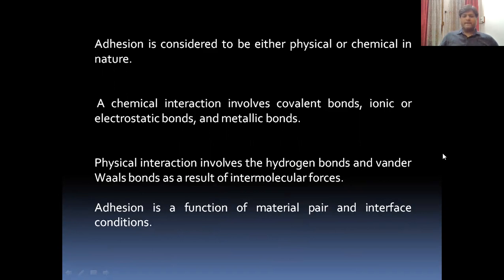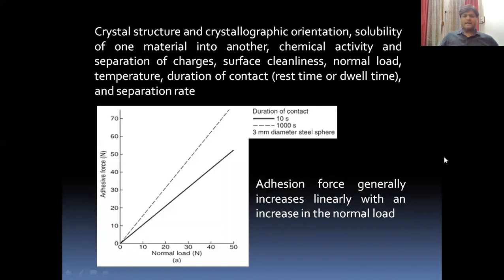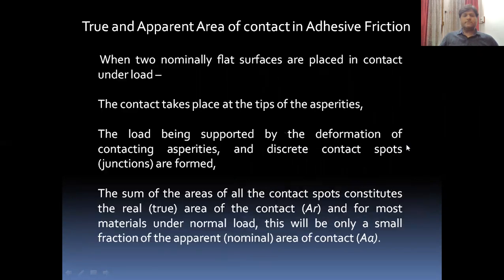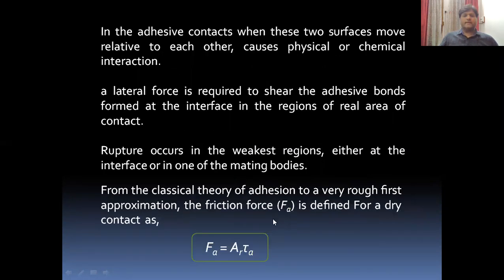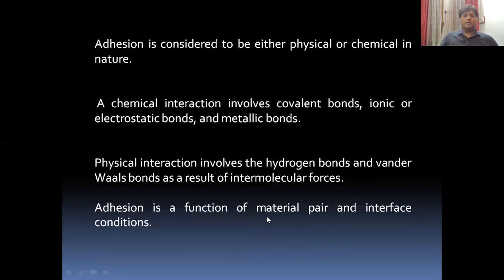The material pair and interface conditions include: crystal structure and crystallographic orientations, solubility of one material into another, chemical activity and separation of charges, surface cleanliness, normal load, temperature, duration of contact, and separation load. These are the properties which normally affect the material pair and interface conditions.